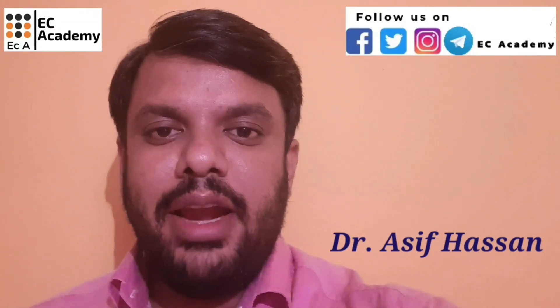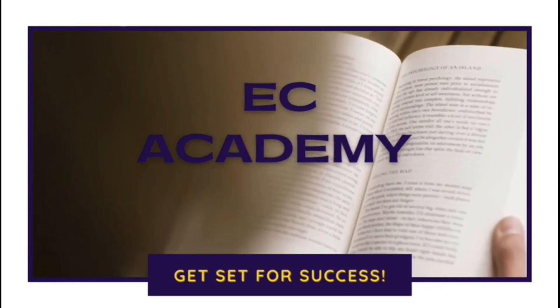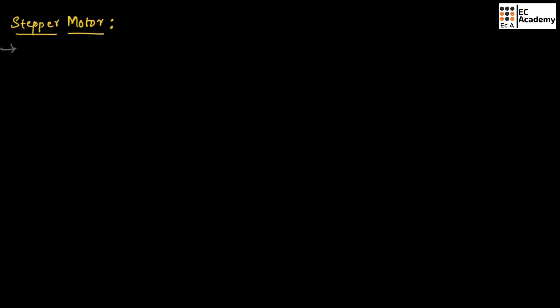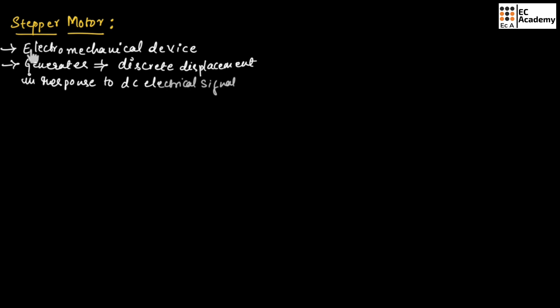Hello friends, welcome to EC Academy. In this lecture let us understand stepper motor. A stepper motor is an electromechanical device which generates discrete displacements in response to a DC electrical signal — it produces discrete displacements when we apply a DC electrical signal as the input.